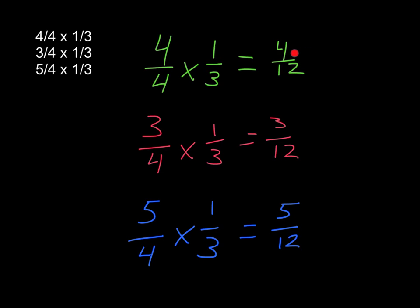Four fourths times one third is four twelfths, three fourths times one third is three twelfths, and five fourths times one third is five twelfths.